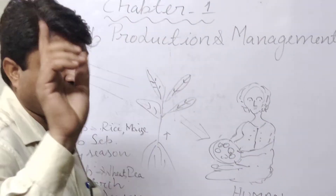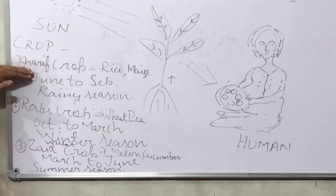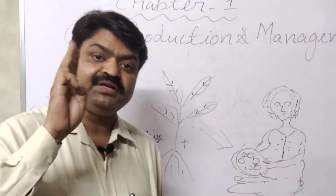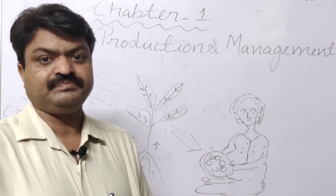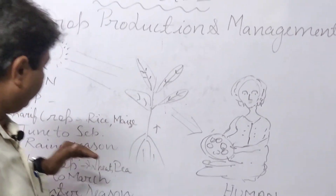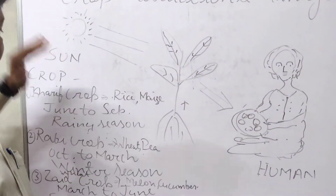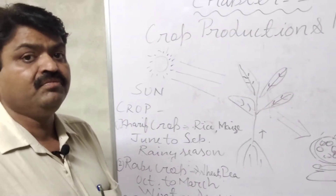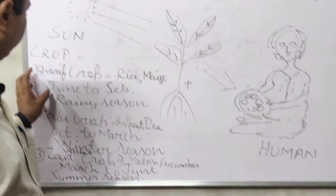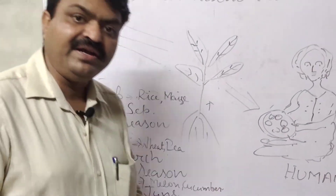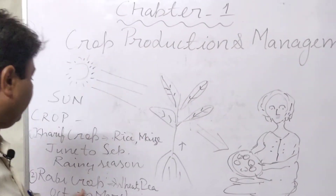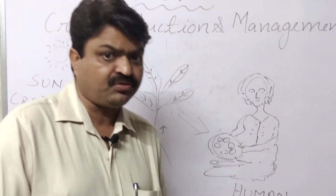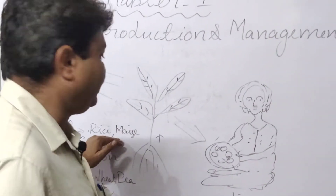There are three types of crops. The first is Kharif crops — the crops that are grown between June and September. These are also known as rainy season crops. Examples of Kharif crops are rice and maize.